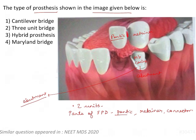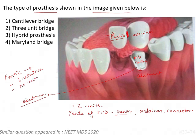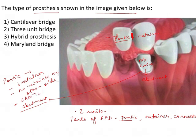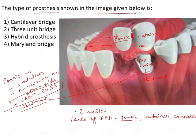This is the connector for this bridge. Since the pontic is not supported by a retainer on one side — hanging in mid-air from the other side with no retainer — it is called a cantilever prosthesis. This is an important word that can be used in any question. Cantilever means supported only on one side. Looking at the options: cantilever bridge, three-unit bridge, hybrid prosthesis, or maryland bridge.